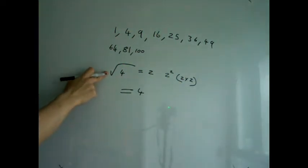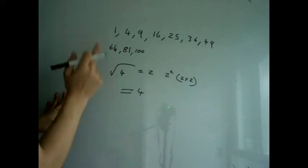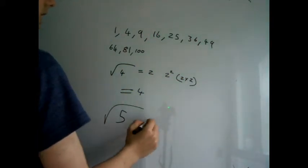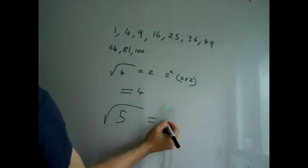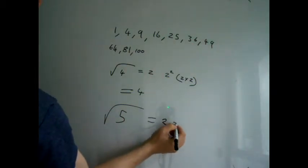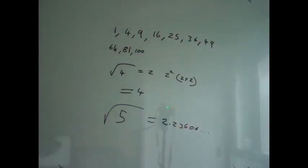So that is a perfect square because the square root equals a whole number. However, the square root of 5 is not a whole number because its result is a decimal. The square root of 5 equals 2.23606 and so on. It's not a whole number and thus it's not a perfect square.